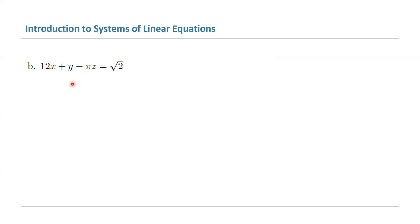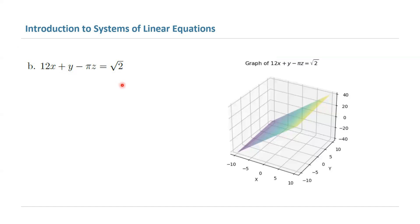Let's make it more interesting. 12x plus y minus pi times z is equal to square root of 2. What is this? It is basically a plane in this space. You have a linear relation between x, y, and z. You have three variables here: 1, 2, and 3.